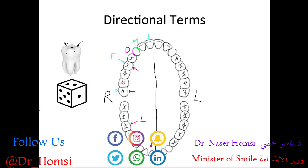That covers four of the five surfaces. The fifth is the surface you're biting and chewing with — this is called the occlusal surface, or 'O' for occlusal.